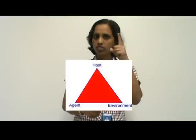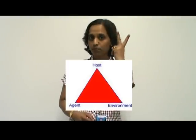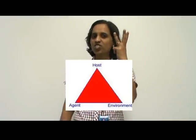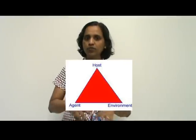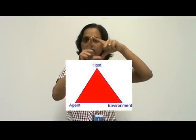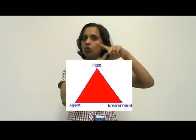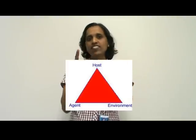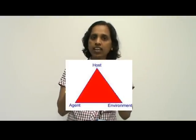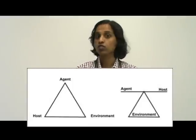The epidemiologic triad is a concept which was devised to describe the interaction between the causative agent, the susceptible host, and the external environment. As we can see here, the three vertices of this triangle are the agent, the host, and the environment. The environment is the platform which allows interaction between the agent and the host to cause the disease.